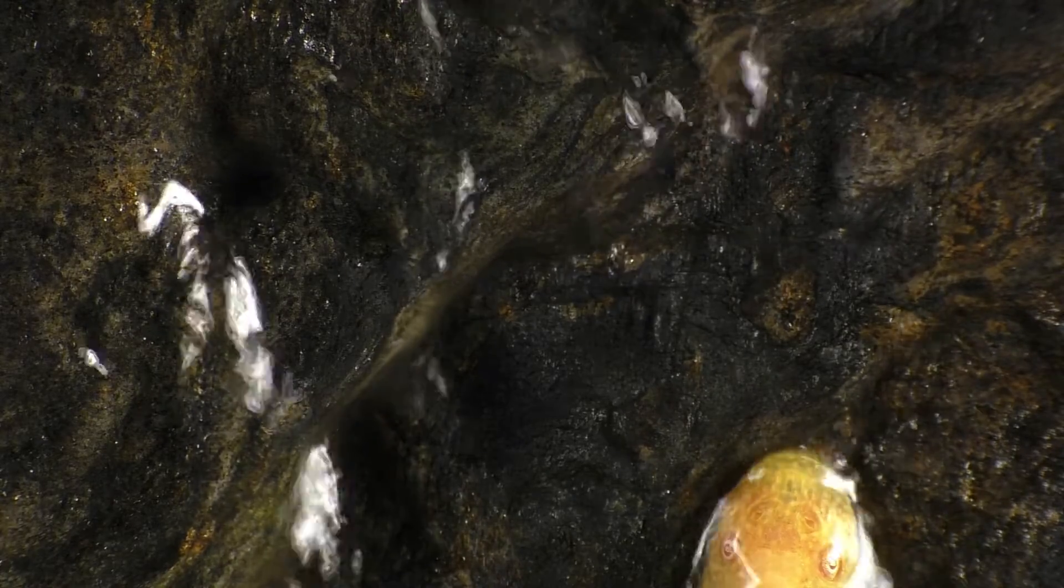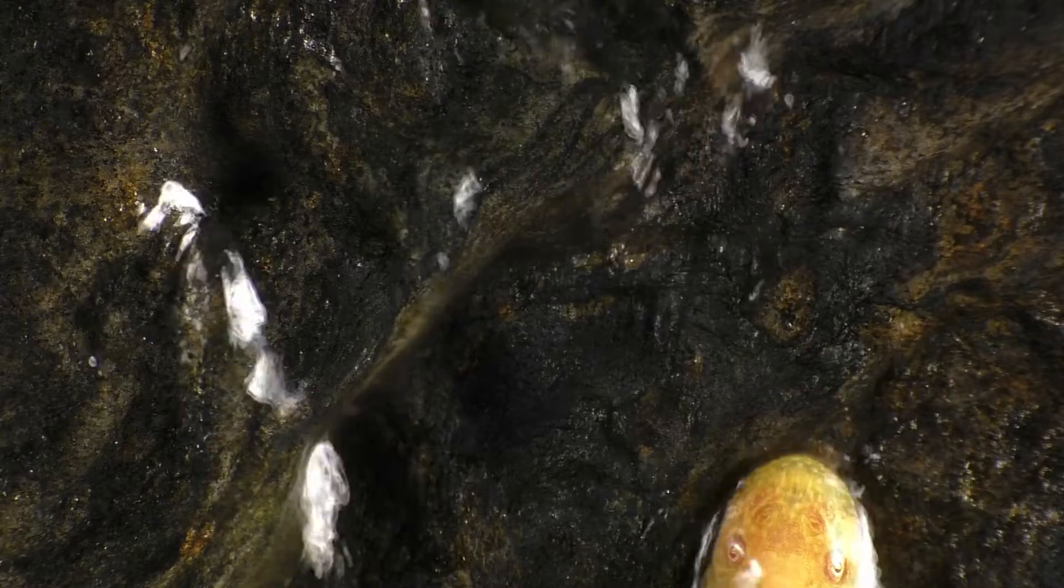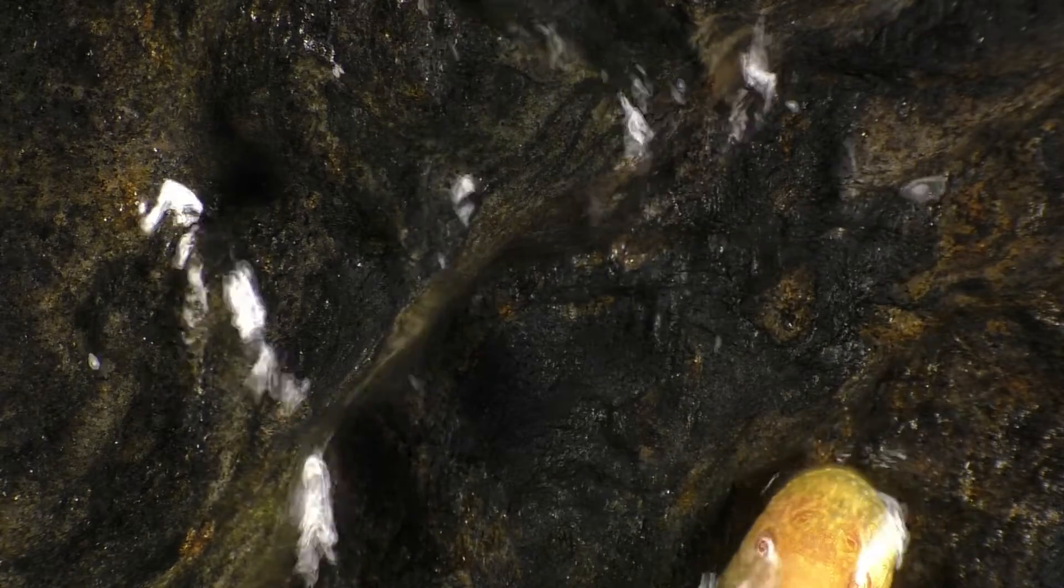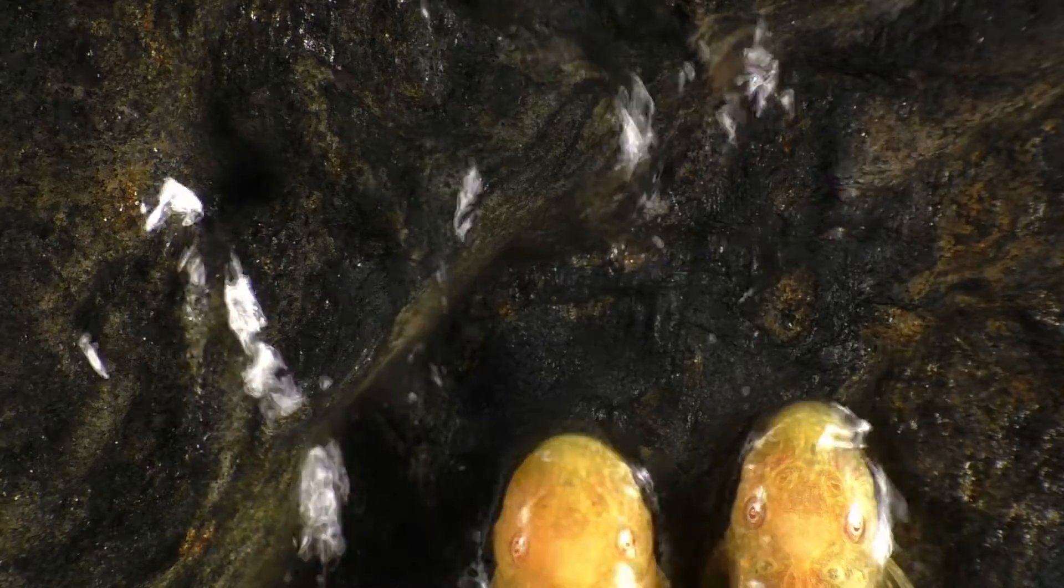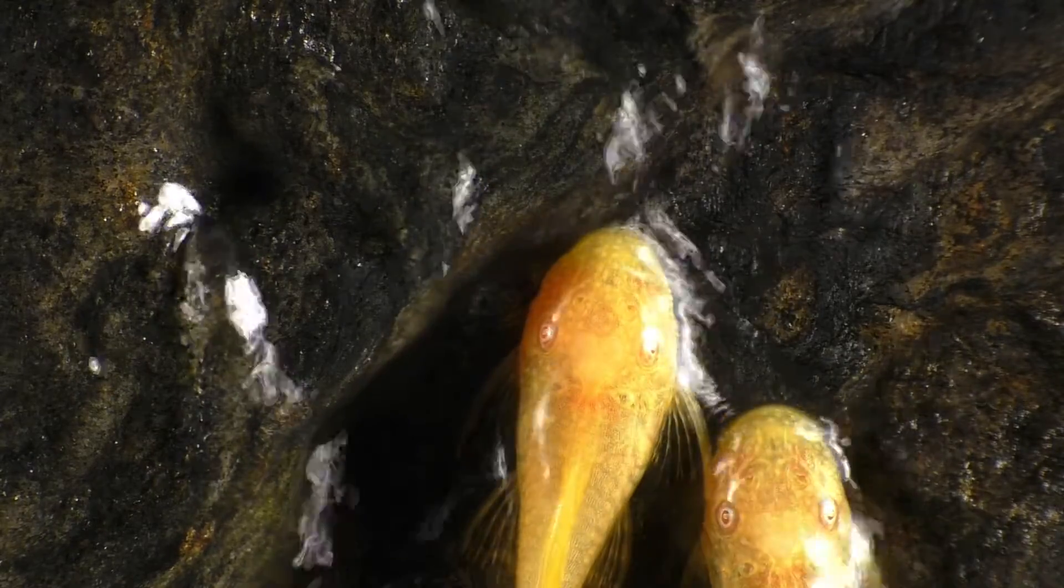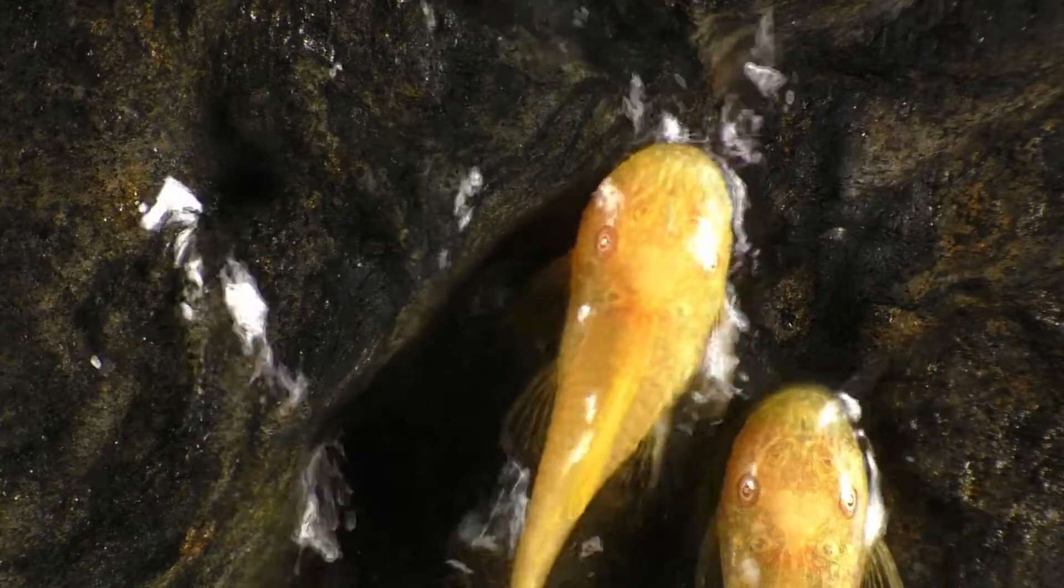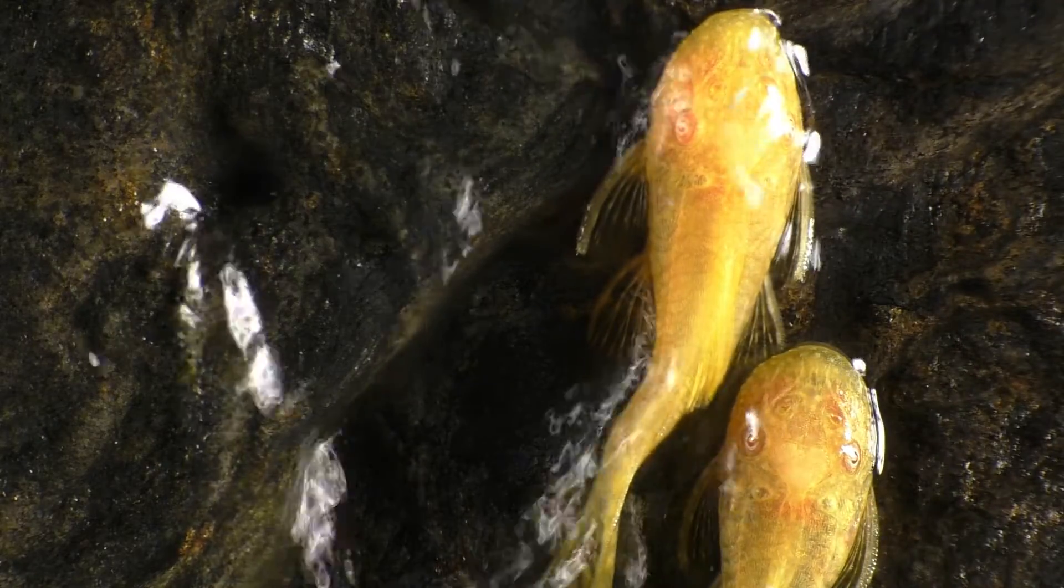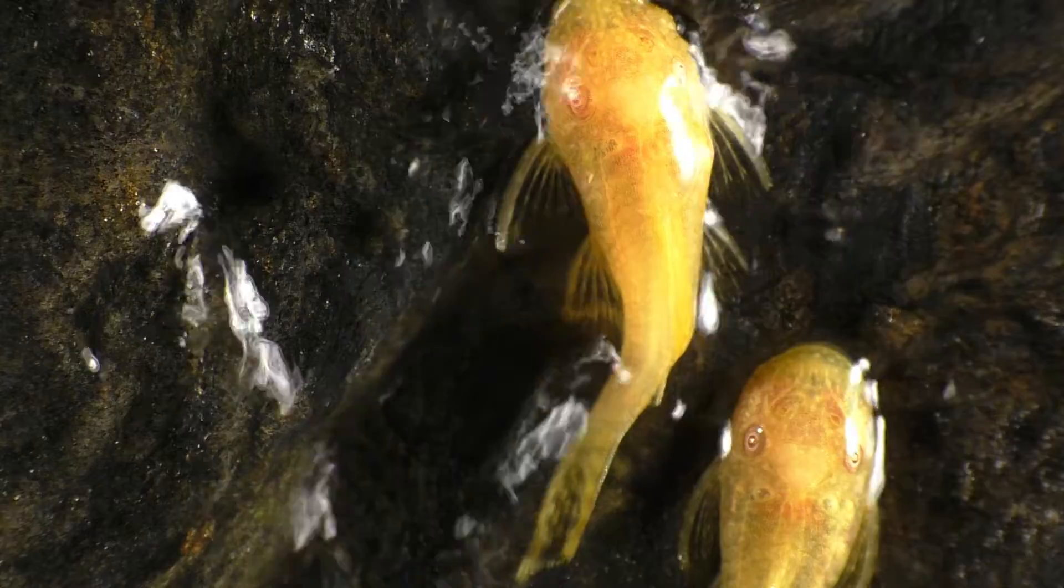In the United States, the state of Florida is currently having a real problem with common plecos that have been introduced into local waterways. The pleco population in Florida has exploded and they're causing a lot of trouble for native species in the area. What's most troubling to me is that the plecos are now harassing one of Florida's most endangered animals, the manatee.